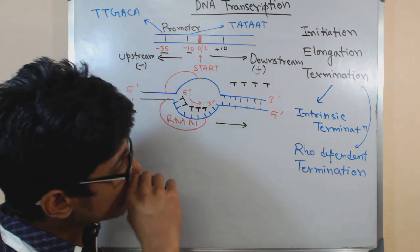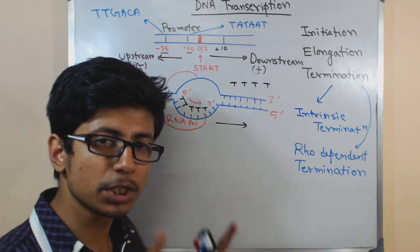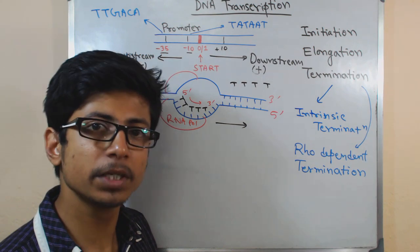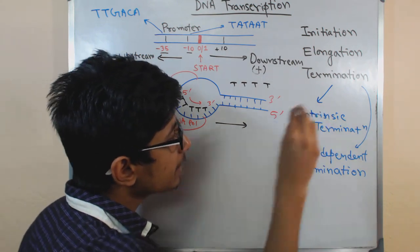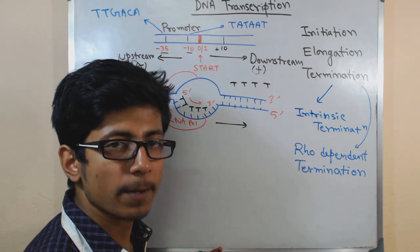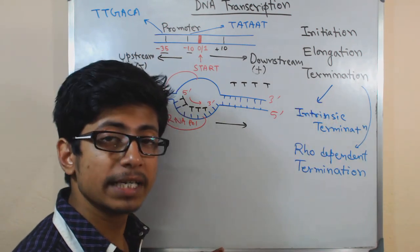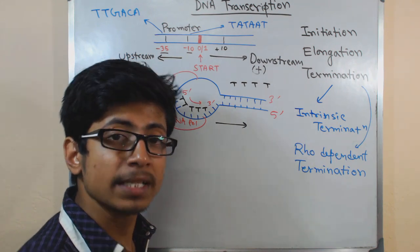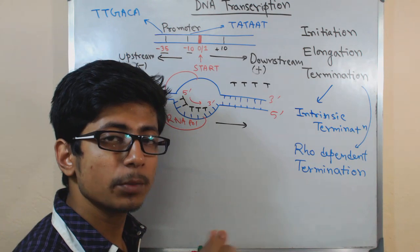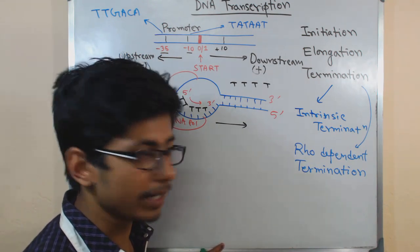In the intrinsic termination process, there is a formation of a hairpin loop that helps in the termination. This termination is a sequence-specific termination, and this sequence is present in the newly synthesized RNA itself. That is why it is called intrinsic termination — because the sequence which helps in the termination resides inside the newly synthesized RNA.